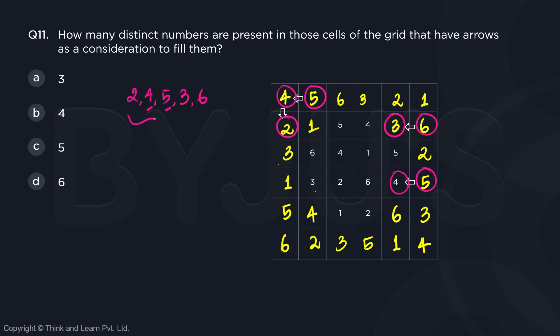So except 1, every other number is there in those cells which is attached or associated with the arrow signs. So the answer is going to be C.